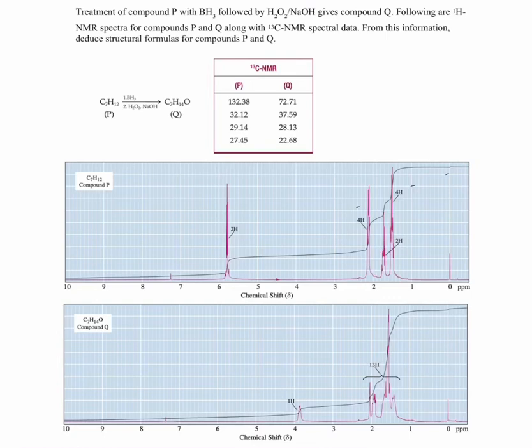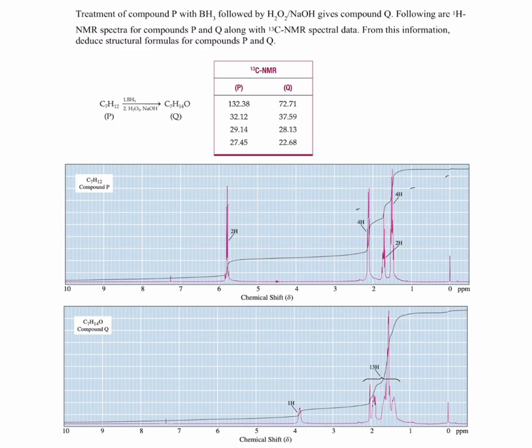Treatment of compound P with borane followed by oxidation with hydrogen peroxide in the presence of NaOH gives compound Q. So now what kind of reaction is this? This reaction right here is hydroboration followed by oxidation.